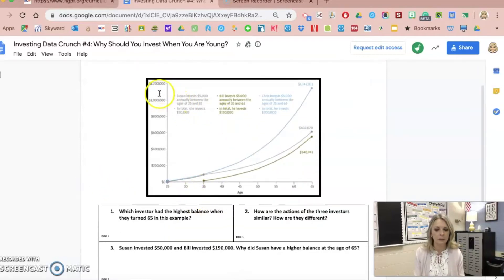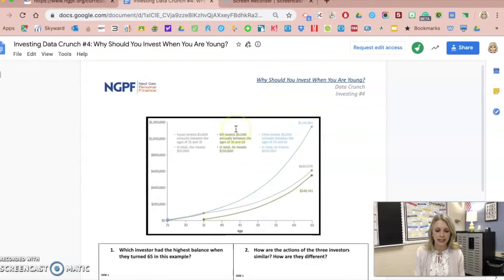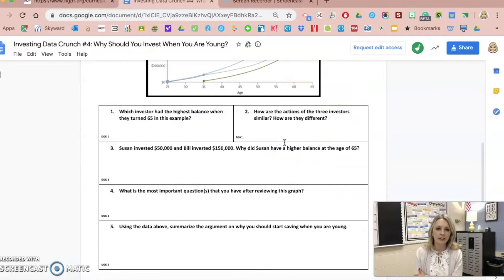All data crunches will start with some sort of chart or graph for students to analyze. In this one, they're looking at the benefit of compounding, the benefit of starting as young as you can to invest and how that compounds and builds wealth over time. Every single data crunch will have five different questions requiring students to analyze that information. Underneath all of them they have a depth of knowledge level, so they'll start with a lower depth of knowledge one and then work their way up to a higher depth of knowledge, making them think deeper about the information.